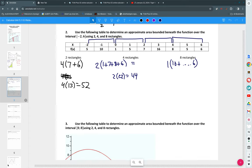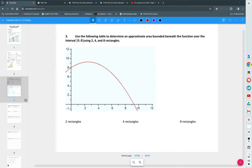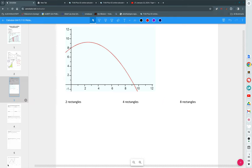And then let's go to number 3. Using the following graph to determine approximate area bounded beneath the function over the interval 0 to 8 using 2, 4, and 8 rectangles. So I'll do 2 with you, and then you can do 4. And then we'll go to our assignment, give you guys some time to work, and make sure you understand what you're doing.